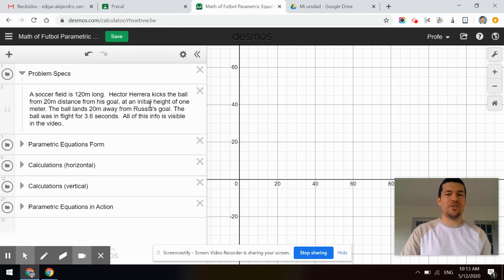Some of the information that we can extract—and you can view the video—some of these are estimates, but they can actually be measured exactly. A soccer field, for example, is 120 meters long.